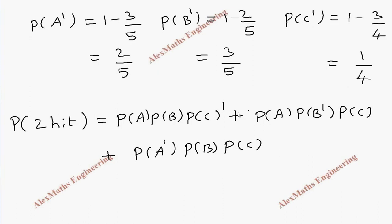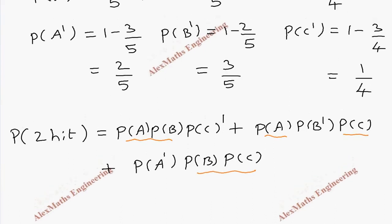So we have written the expression for 2 hit. So 2 hit and 1 does not hit. So here A and C hit, B does not hit. Here B and C hit, A does not hit. So we have written in the cyclic order. Now we have to substitute the values.